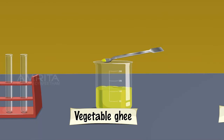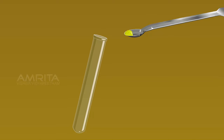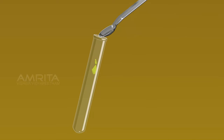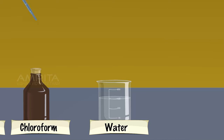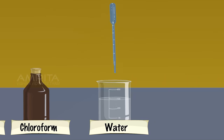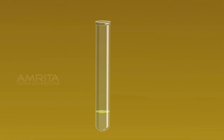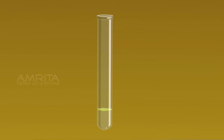Vegetable Ghee. Using a spatula, take a small amount of vegetable ghee in a test tube. Using a dropper, take about 5 ml of water and add it into the test tube containing vegetable ghee. Vegetable ghee is immiscible, i.e., not mixable in water.